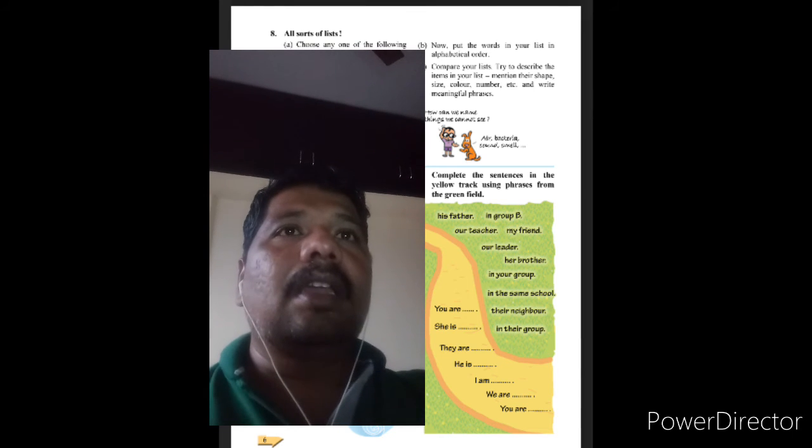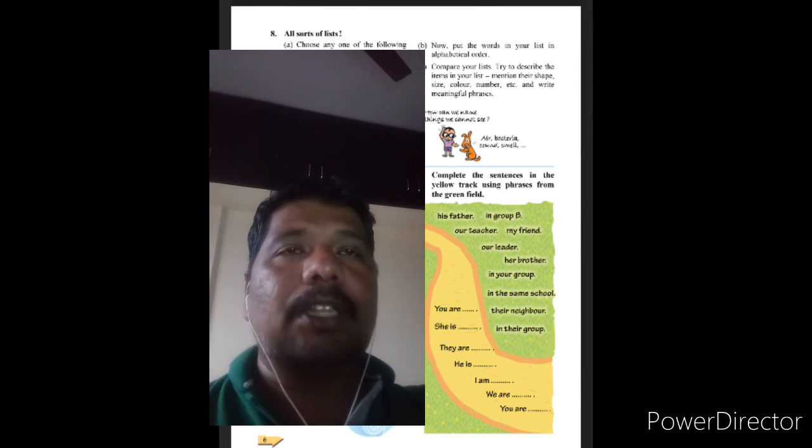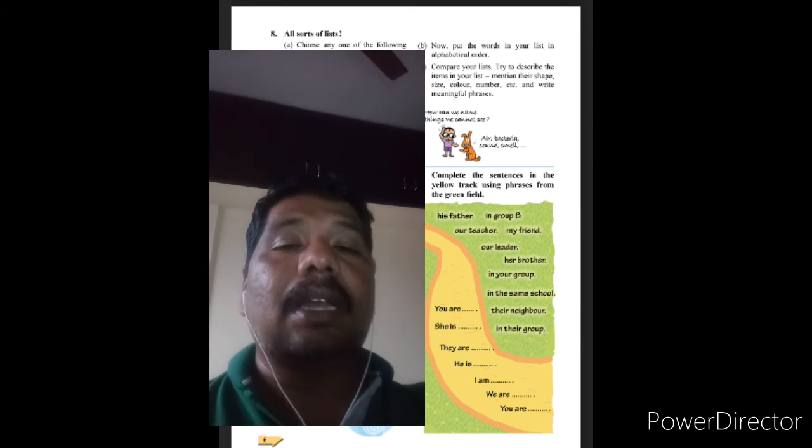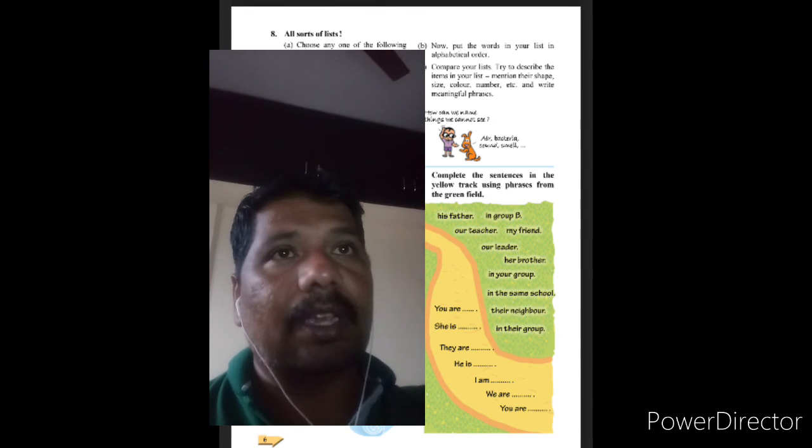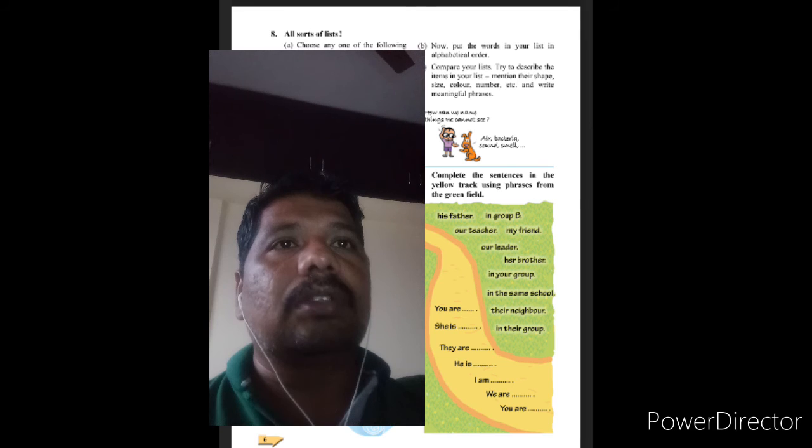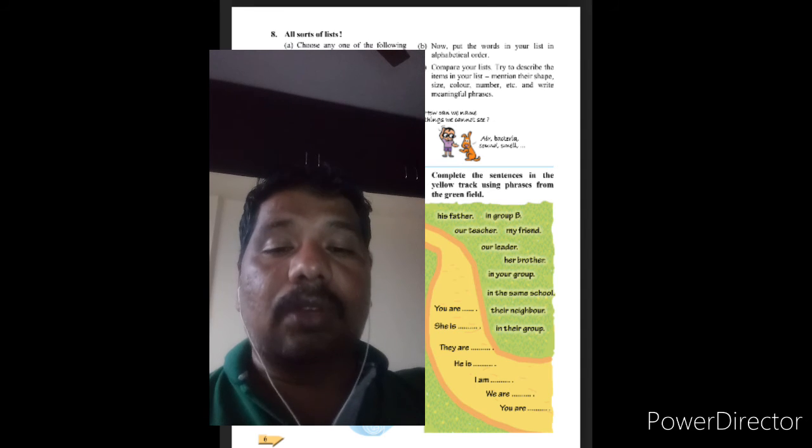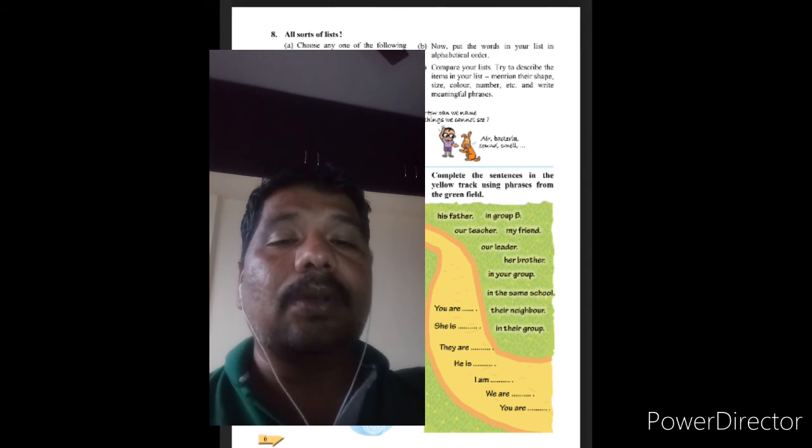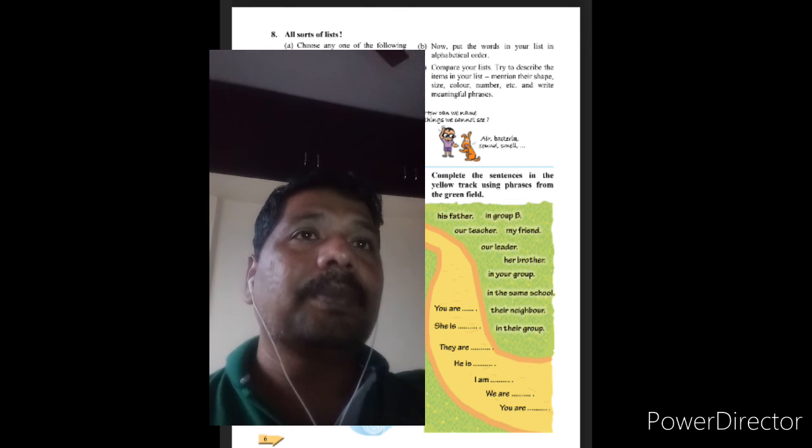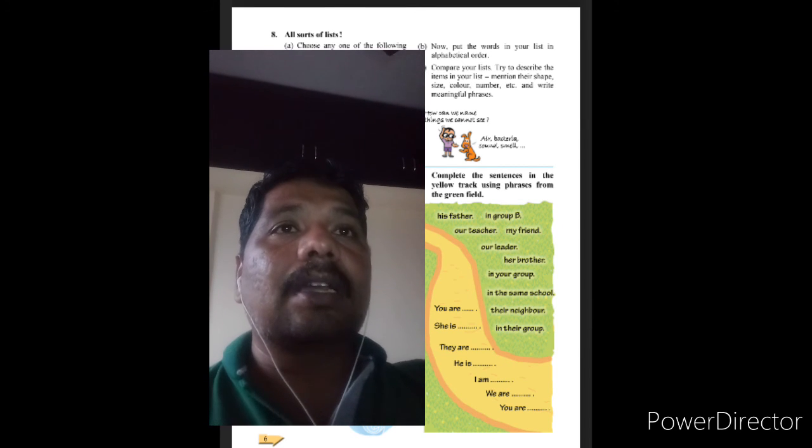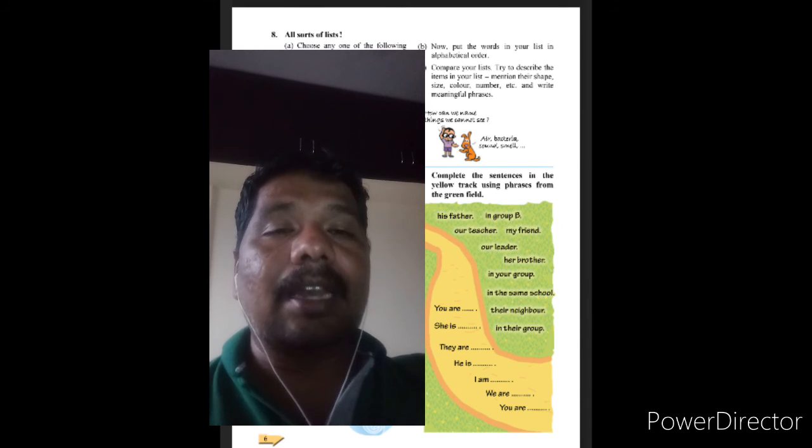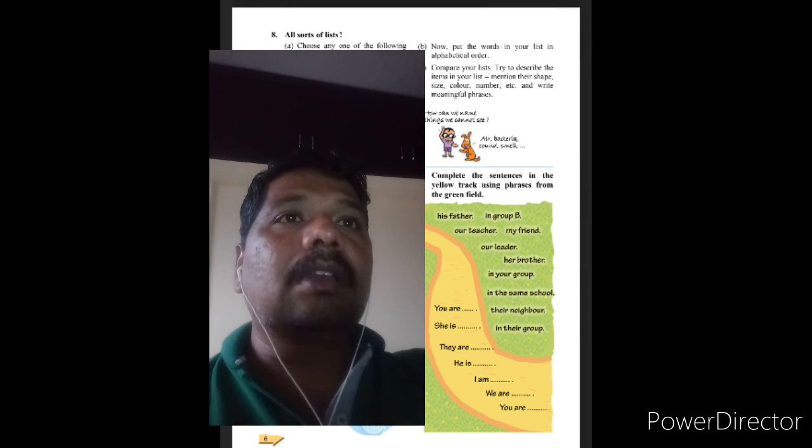In question 8, you have to make the list topic wise. How many topics are there? One, two, three, four, five, six, seven, eight, and nine. This activity has to be done without looking in your books. Write the topic names and within two minutes write down as many words as you can related to the given topic.